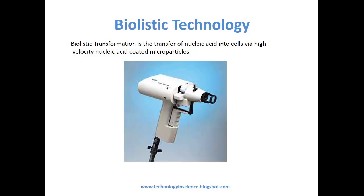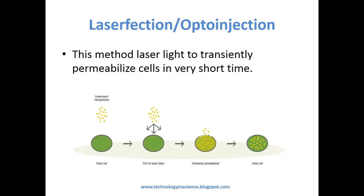Biolistic transformation is the transfer of nucleic acid into cells via high-velocity nucleic acid-coated microparticles. Laserfection or optoinjection uses laser light to transiently permeabilize cells in a very short time. Various substances can be efficiently optoinjected, including ions, small molecules, dextrins, plasmids, proteins, etc.